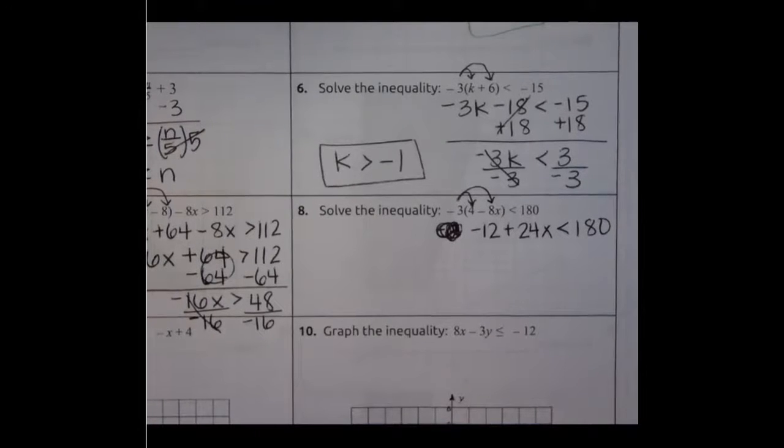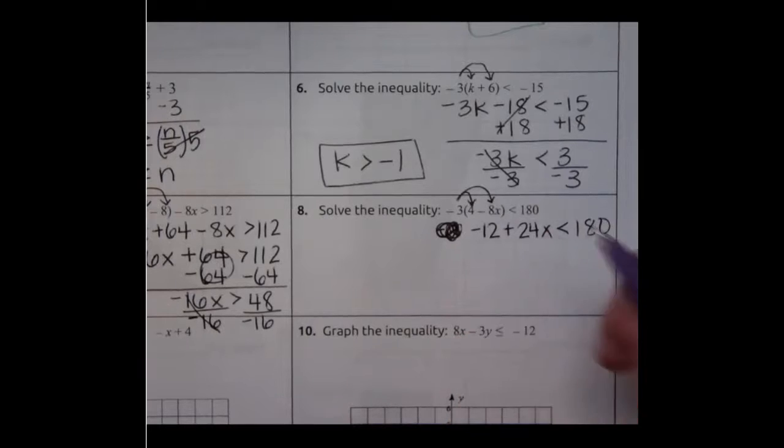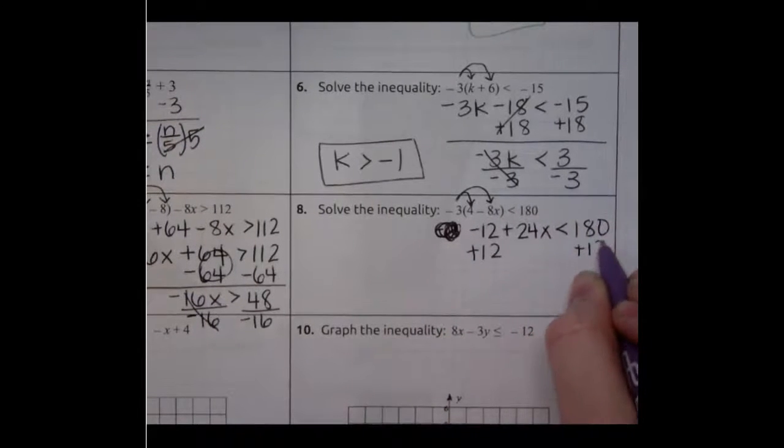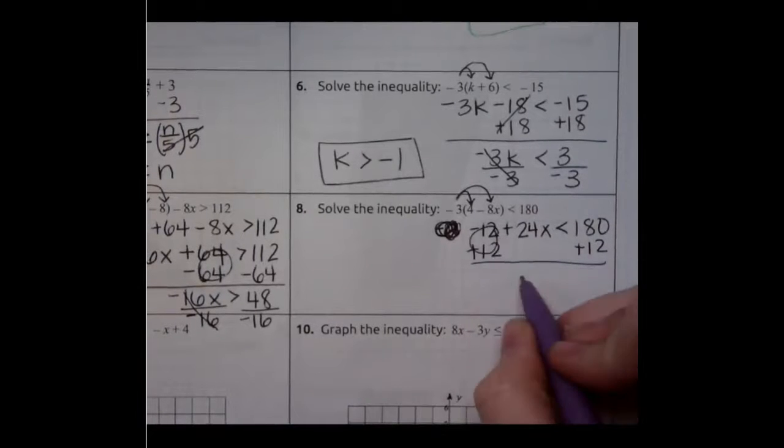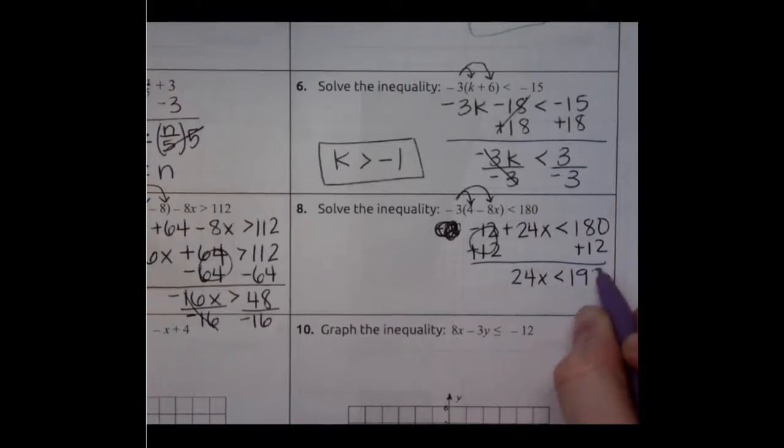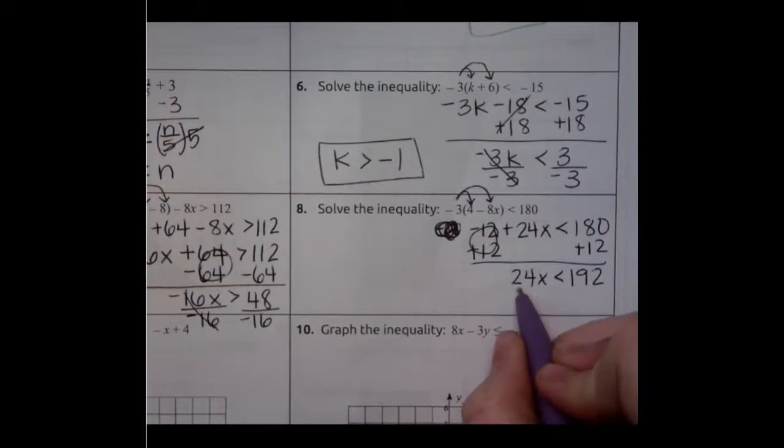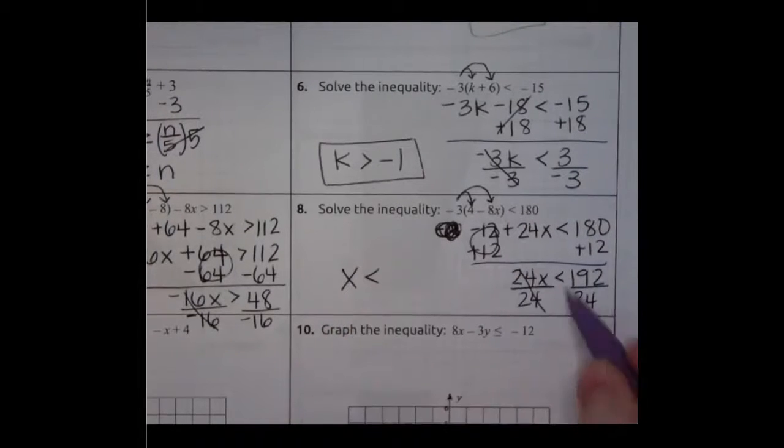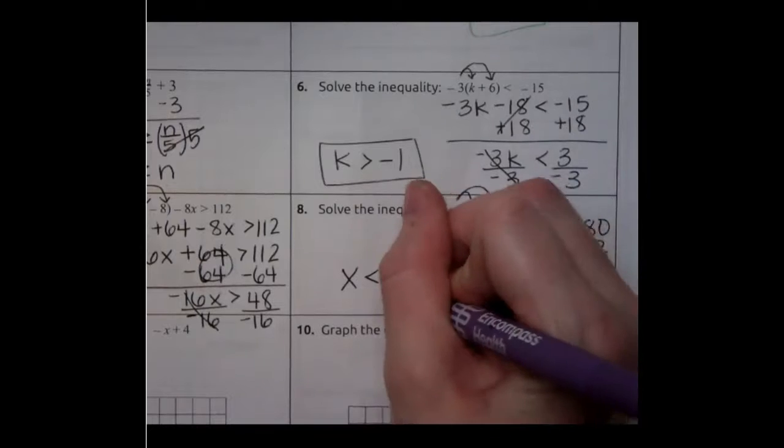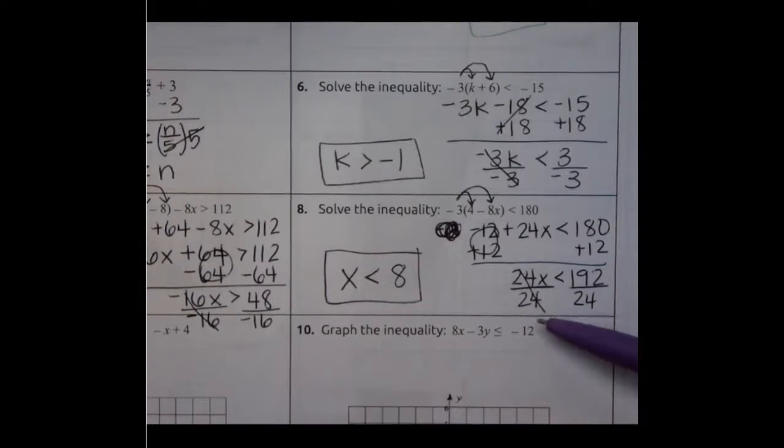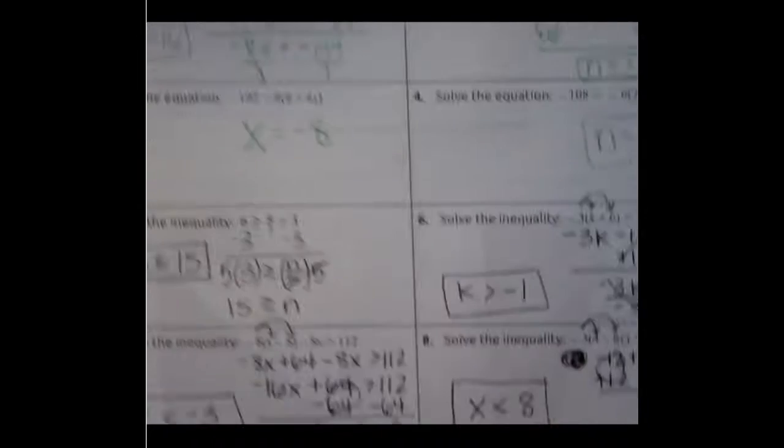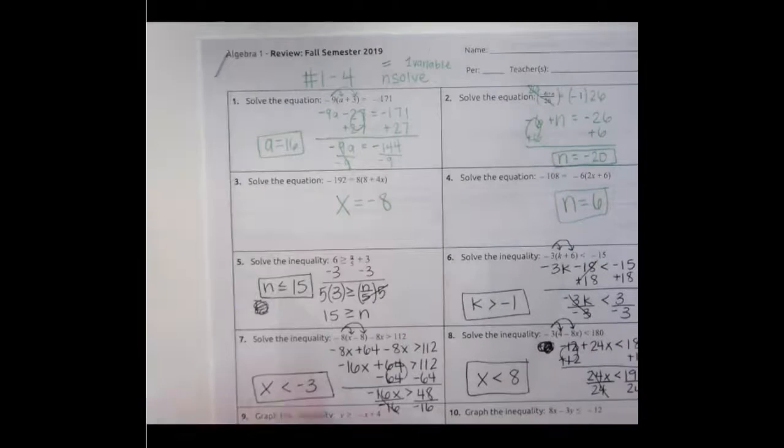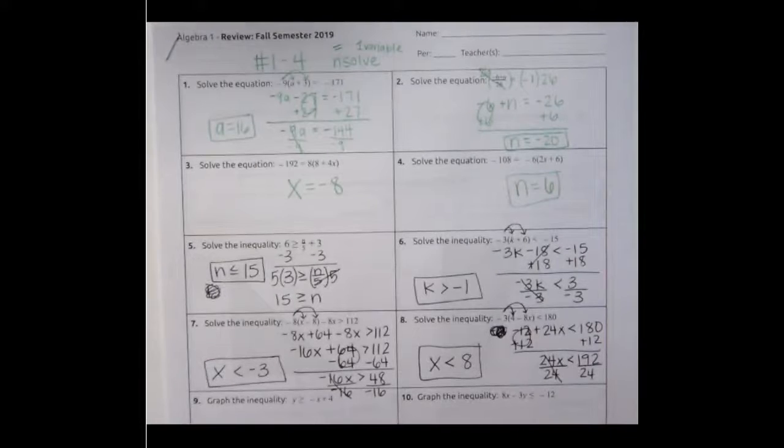Now I'm just solving like normal. So the 24 is attached to the x. That means I'm going to get rid of the 12 first. It's being subtracted. So I'm going to add on both sides. This becomes 0. 24x is less than 192. So the next step is to get rid of this 24. It's currently attached to the x by multiplication. Divide on both sides. We get x is less than and you can type this in your calculator and you should get positive 8. Now notice this time I divided by a number that was not negative. So I did not flip my symbol. So please make sure that you know how to do all of these questions. They're going to look very similar on your exam. May the odds be ever in your favor.